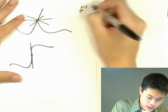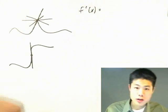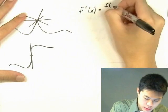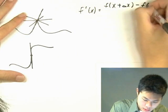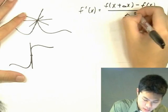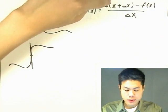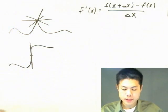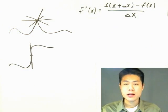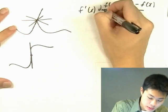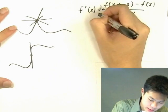We know that the first form that we've already learned looks like this: f'(x) equals the limit as delta x goes to zero of f(x + delta x) minus f(x) all over delta x.